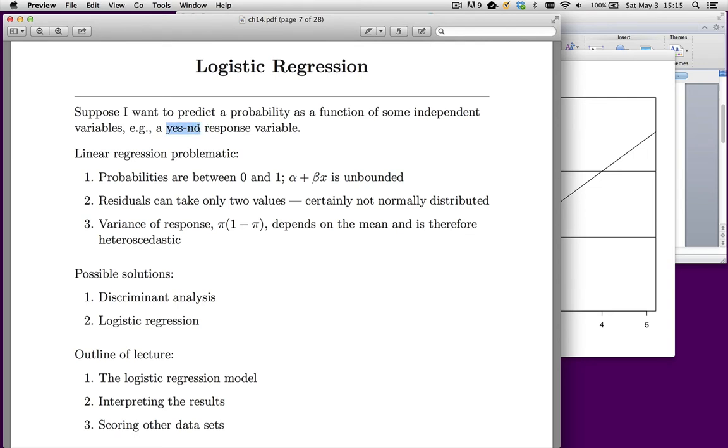We could have an email and we want to classify it as being spam or not spam. So that would be a yes-no situation. We could have a variety of user characteristics and visitor characteristics, and we want to predict whether or not this visitor will click on a display ad that's on a website.